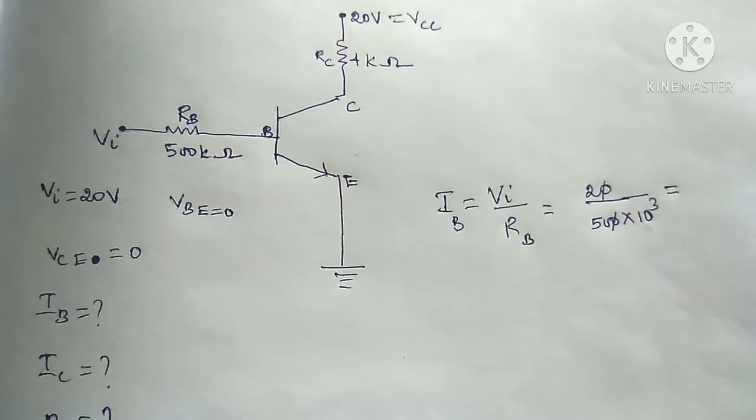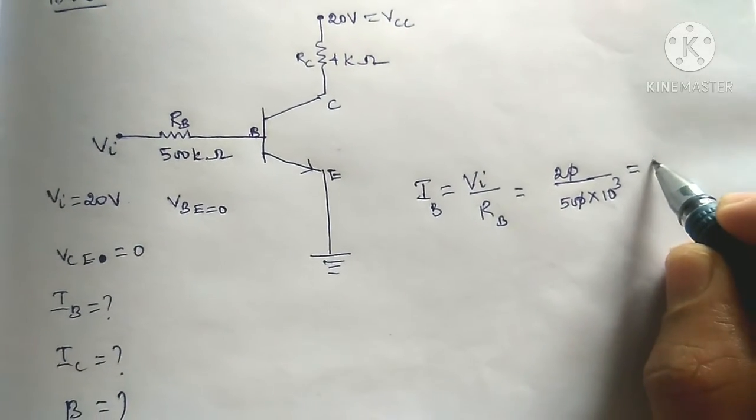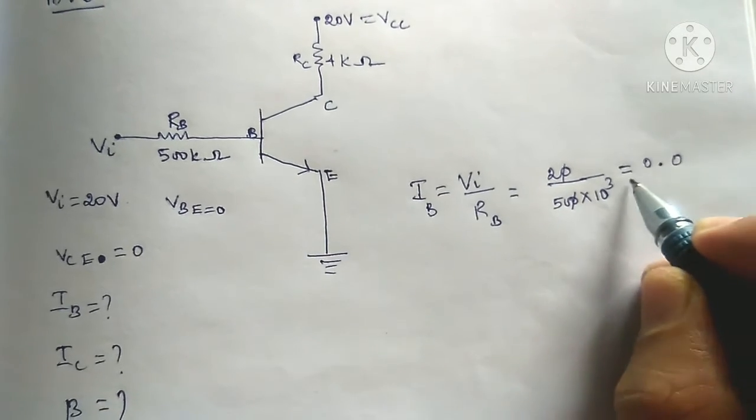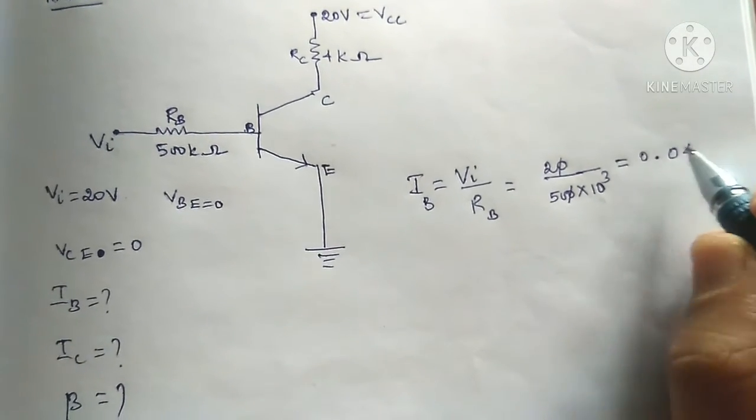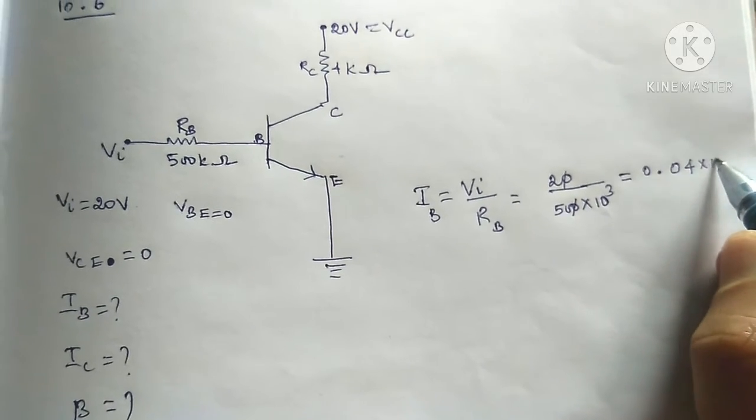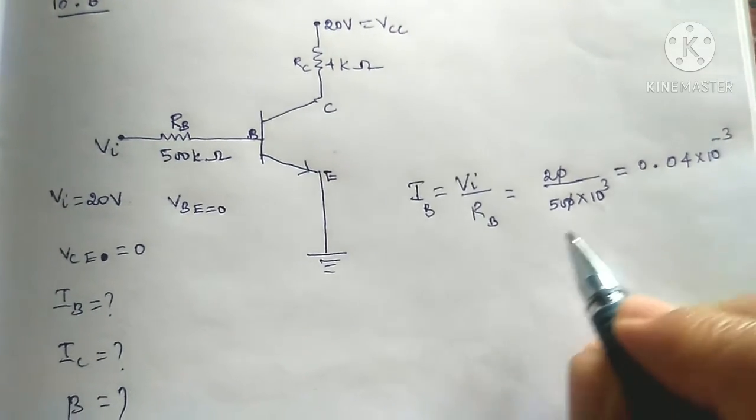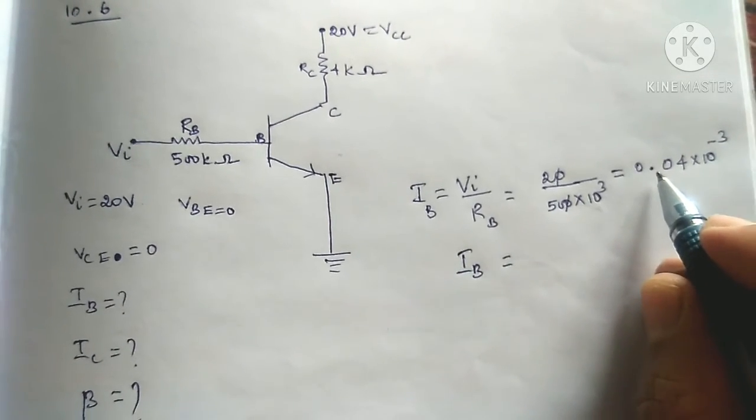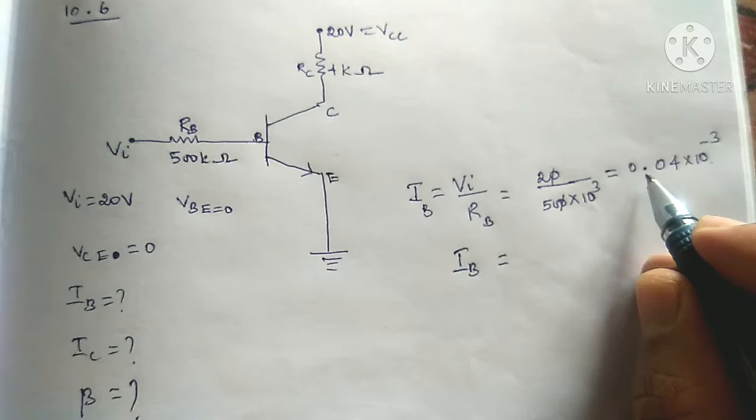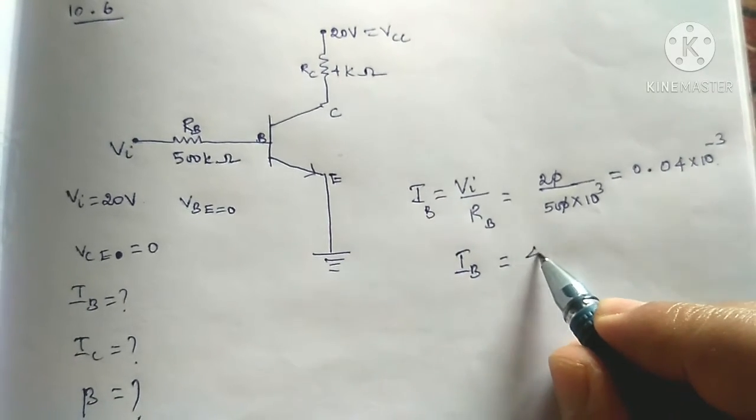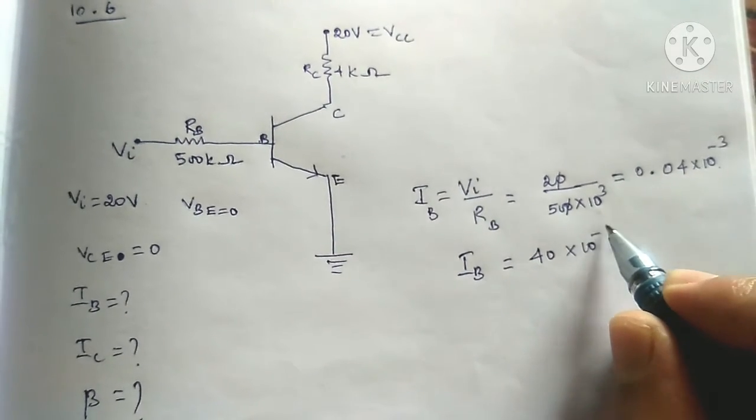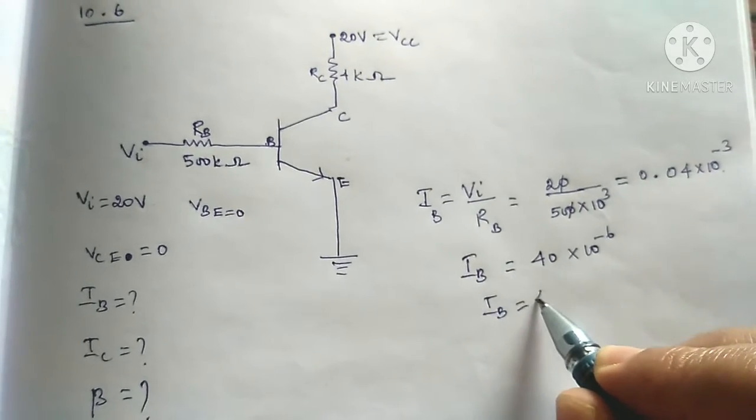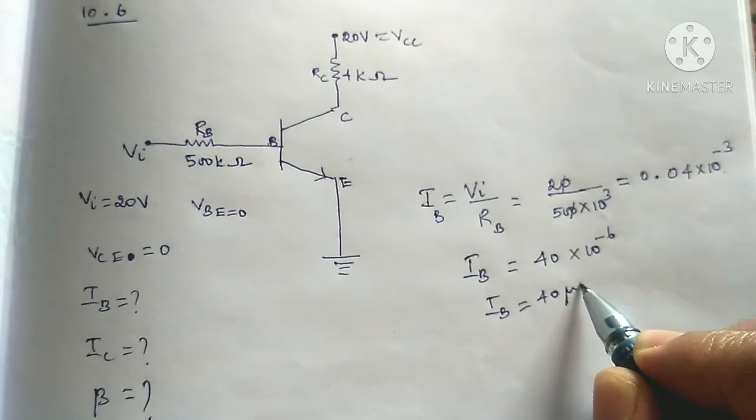Then solve the number. So the point is 20, then input voltage is 200. Then 4 times 10 power 3 kilo ohm, 10 power minus 3. Now I say base current is micro ampere, 10 power minus 6, 3 digit 40 into 10 power minus 6. That is IB equal 40 micro ampere.